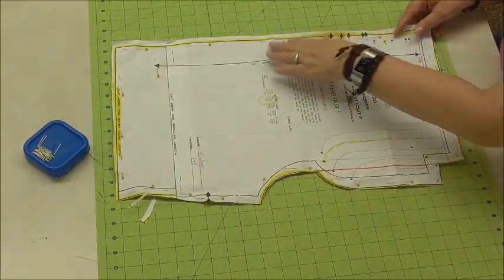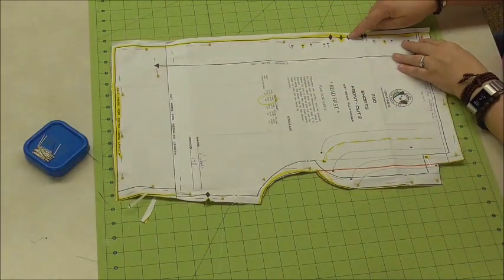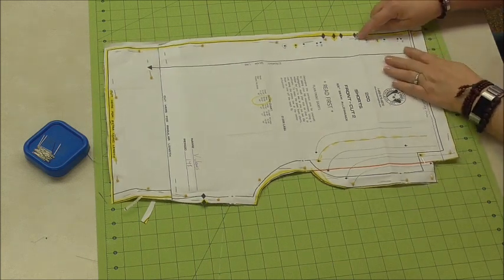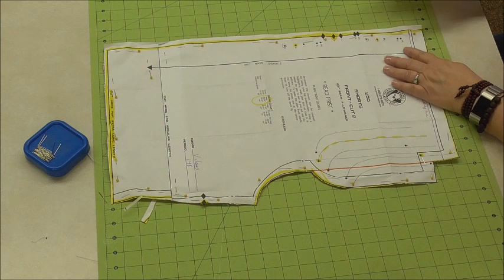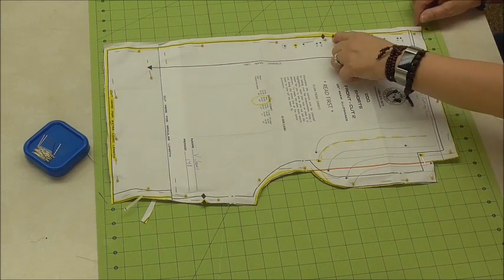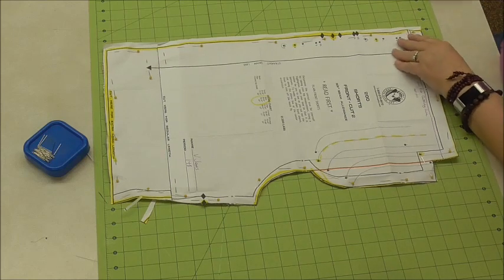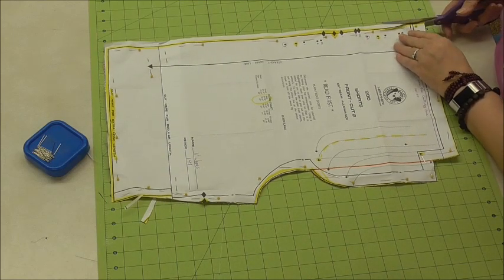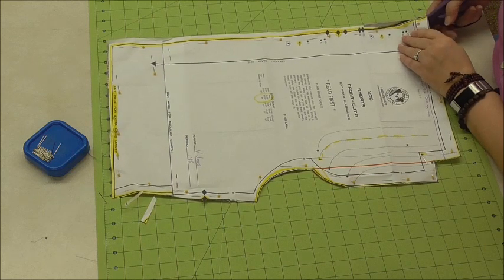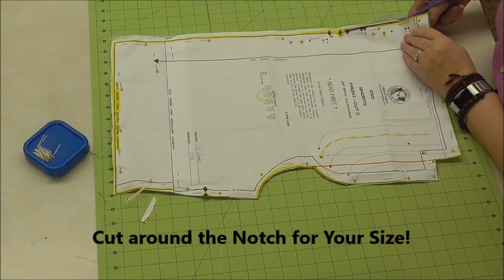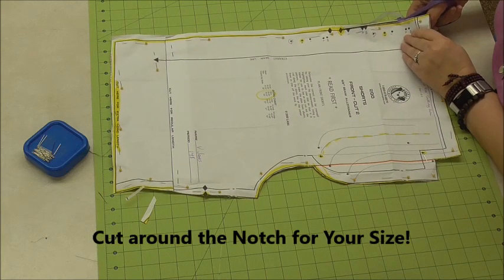Now I'm going to go down the side where the notches are and show you what to do with those because we don't want to go in and out and in and out and in and out down this side. That's ridiculous because the only one we're going to match is that one right there. We don't need all those extra little teeth sticking out. So I'm going to cut smoothly down this side and I'm going to cut off the notches until I get to the medium and then I'm going to stop.